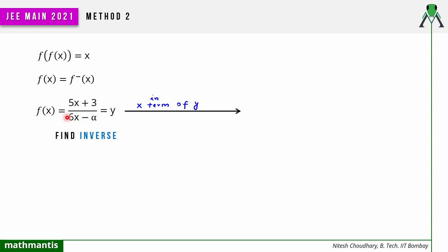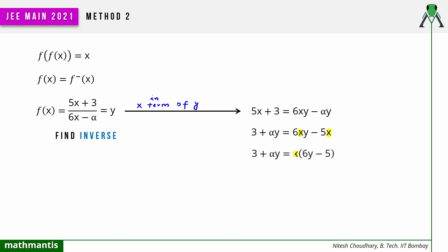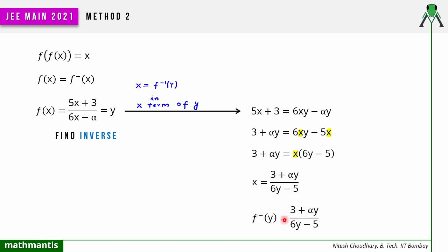Cross-multiplying gives 5x + 3 = 6xy − αy. Rearranging, we get 3 + αy on one side and move −5x to get x(6y − 5) = 3 + αy. So x in terms of y is: x = (3 + αy) / (6y − 5). Since f(x) = y implies x = f⁻¹(y), this means f⁻¹(y) = (3 + αy) / (6y − 5), which is the inverse of the function.